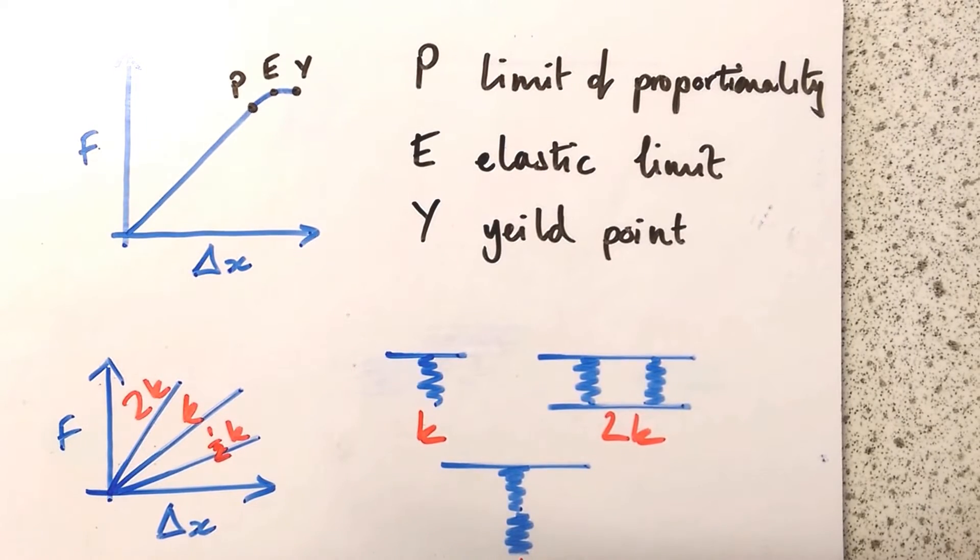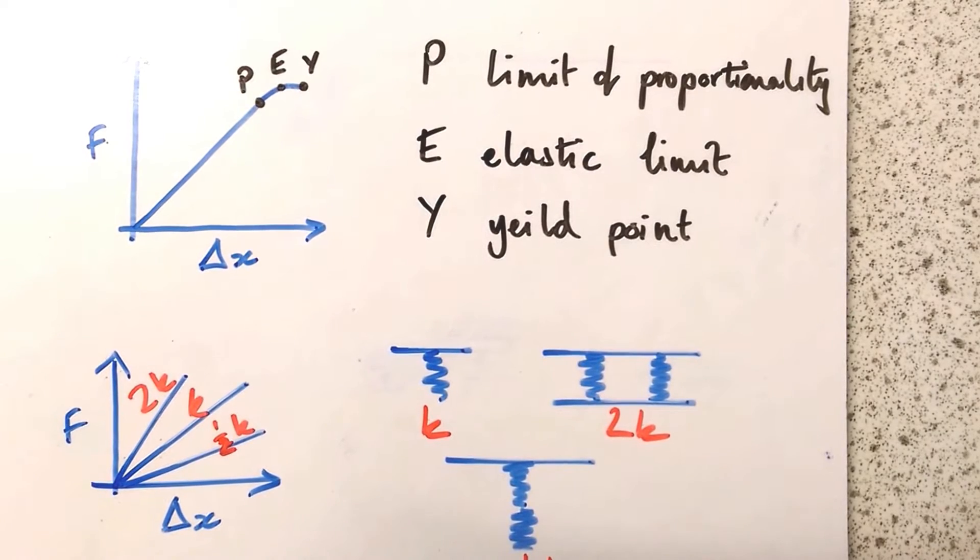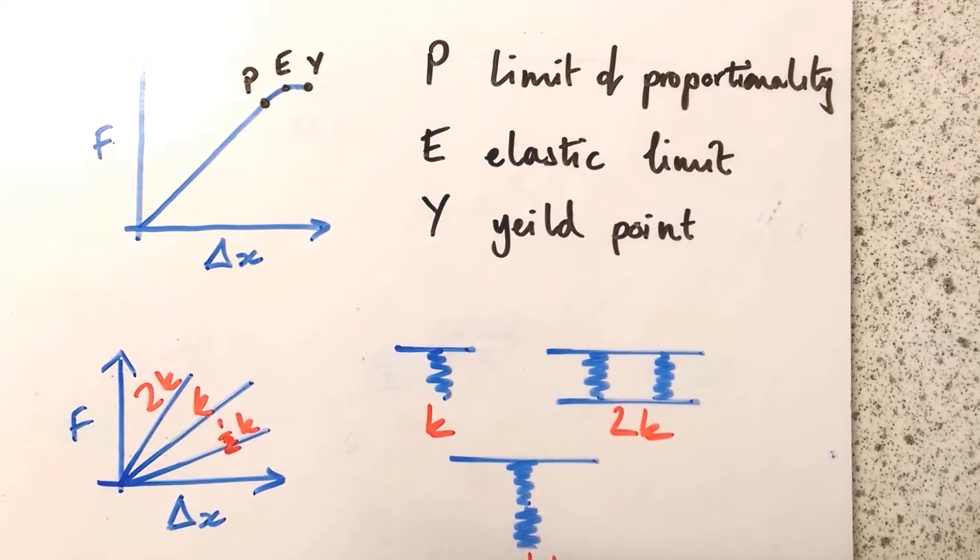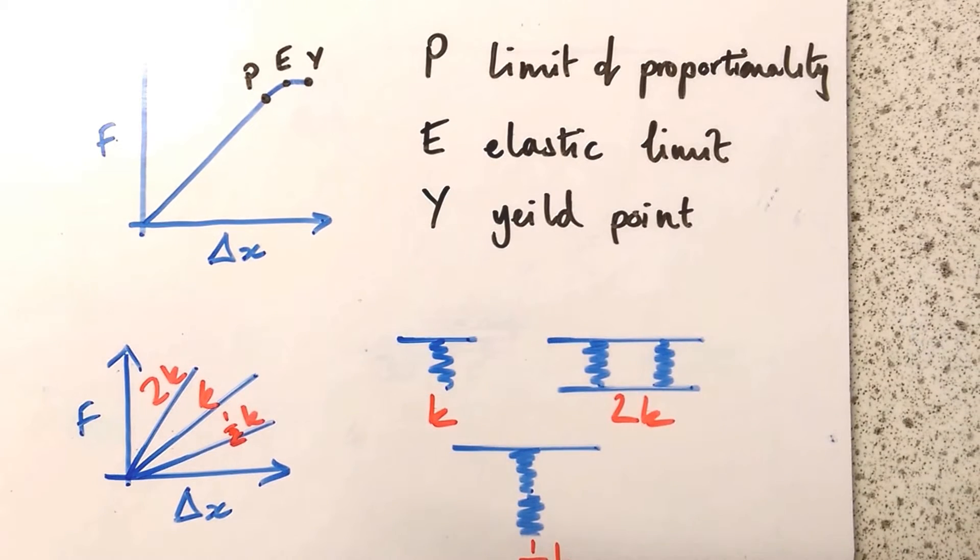E is the elastic limit. The elastic limit is where, if we unload this spring now, it will no longer return to its original shape. We say it's had a plastic change, a change which will not be reversed.